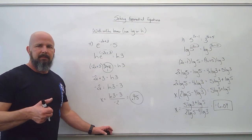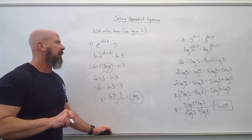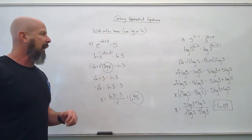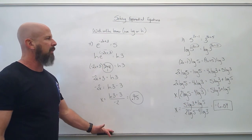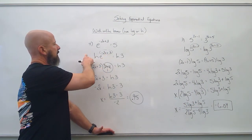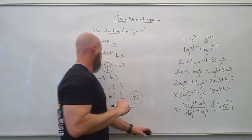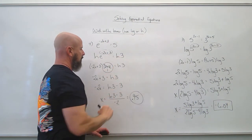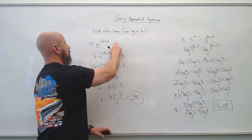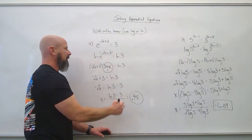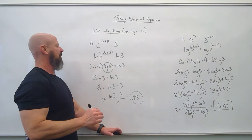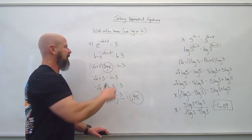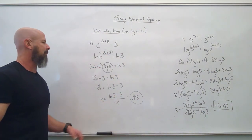In summary: if we can get like bases, compare the exponents. If we can make an adjustment to get like bases, compare the exponents. If we can't, use logarithms to bring the exponents to the front. Also, I just noticed a mistake — I had a 5 there that I wrote as a 3. Just change the original problem to a 3 and we're good to go.